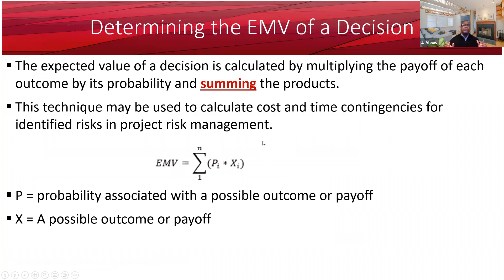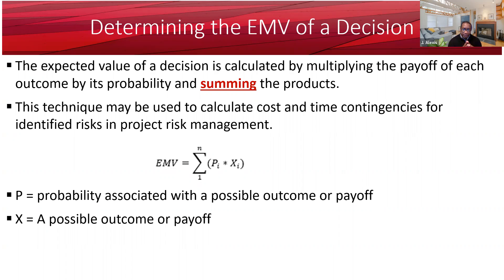How do you determine the EMV of a decision? The expected value of a decision is calculated by multiplying the payoff of each outcome by its probability and summing the products. I highlighted, bolded, and underlined 'summing' for a reason: you do not have EMV until you sum the products. EMV is not just one product — EMV is the sum of the products. You can use this technique to calculate cost and time contingencies for identifying risk if you're managing risk in a project.